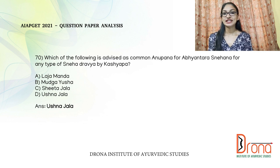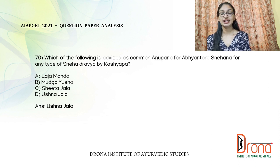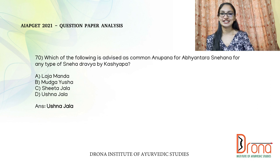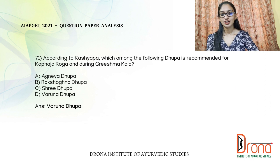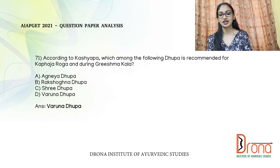The next question: which is advised as a common anupana for abhyantara sneha panam for any type of sneha dravya according to Kashyapa? In Kashyapa Samhita Sutra Sthanam, Sneha Adhyayam, for ghrita Ushnodakam is indicated, for taila Yusham is indicated, and for vasa and majja Mandam is indicated. Ushnodakam is told as sarva sneha anupanam, so the answer is Ushnajala.